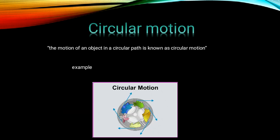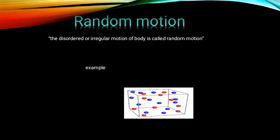Circular motion: the motion of an object in a circular path is known as circular motion. A toy train moving on a circular track, and Earth revolving around the Sun, are examples of circular motion.